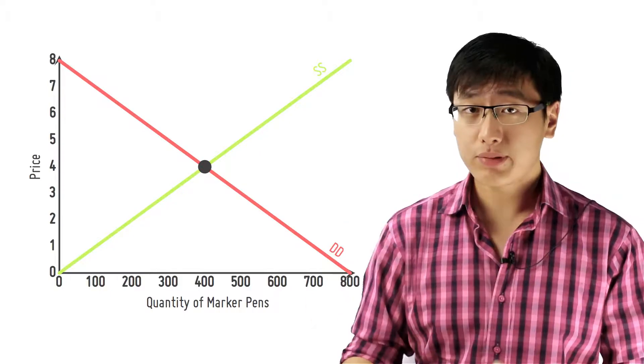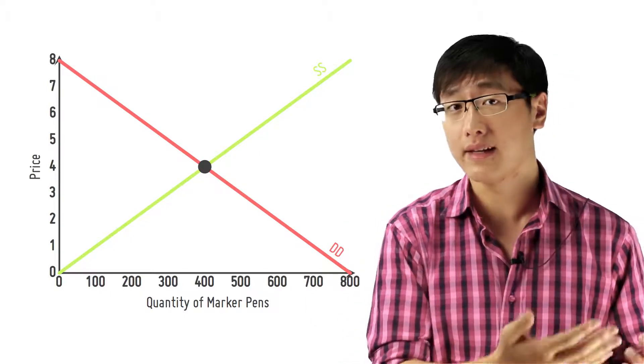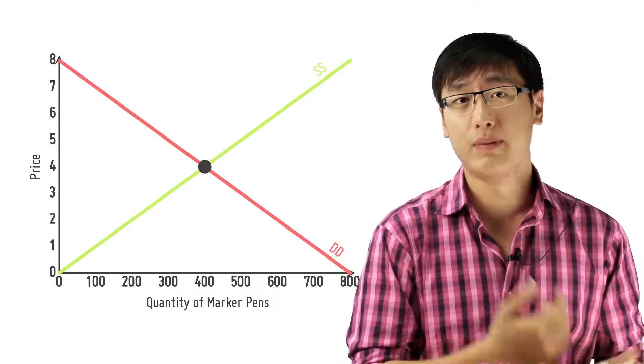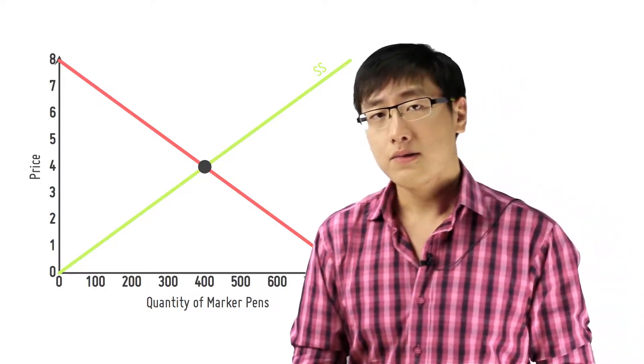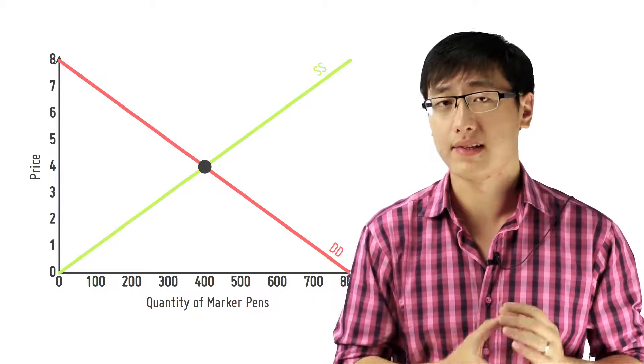But the equilibrium price and the equilibrium quantity, the ending point, doesn't just happen because the two lines intersect. No, that is not a reason, that's just a graphical phenomenon. So what actually happens in the background is this.